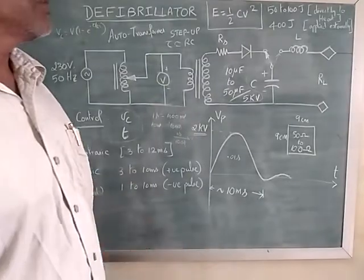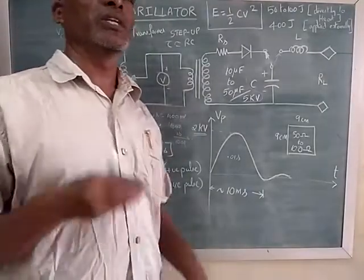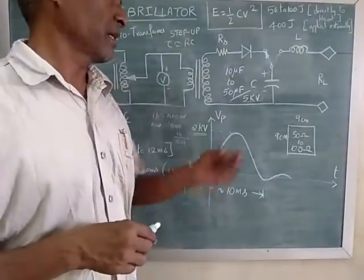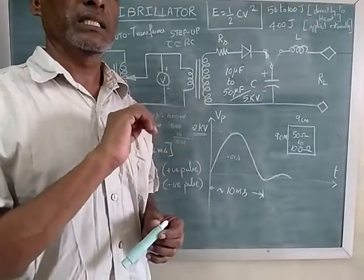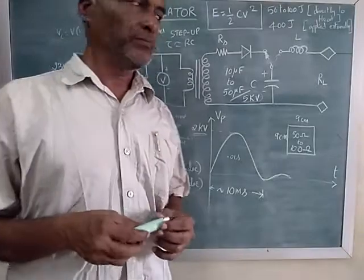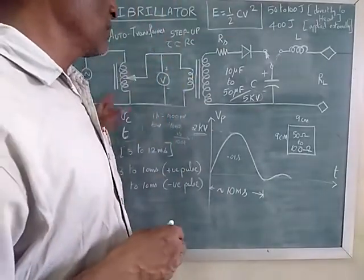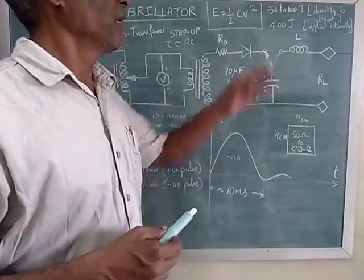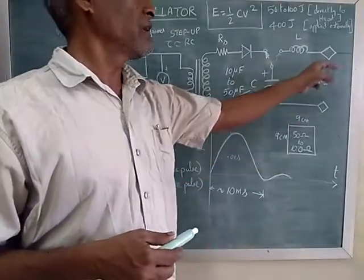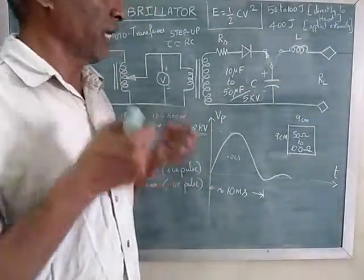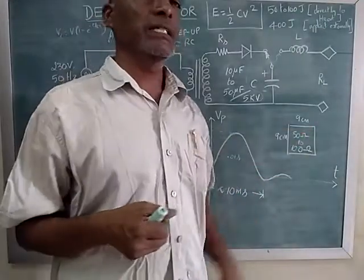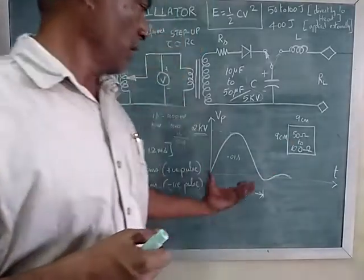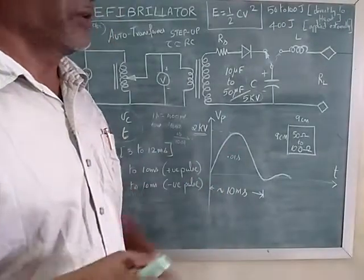So by this explanation, you know how the internal circuitry of a defibrillator works. The key component involved here is the capacitance, because you are making the capacitance charge and capacitance discharge. Also you come to know what's the voltage required, time required, energy required for different cases. What is the area of the plates that is placed, that the electrode size, 9 centimeter into 9 centimeter, approximately 81 centimeter square, and the resistance of the plates. The typical shock waveform given to the patient.